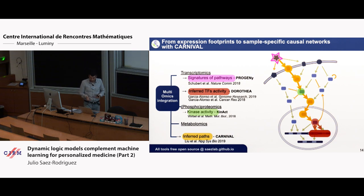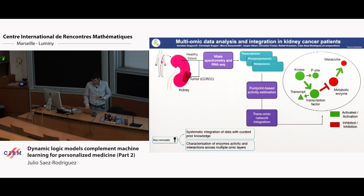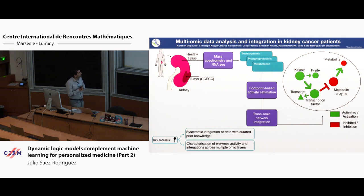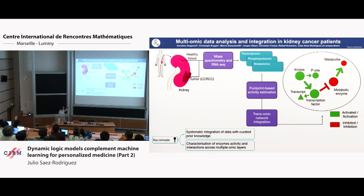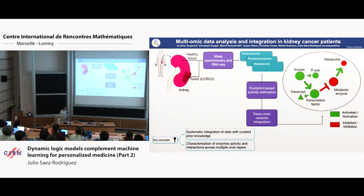Multi-omics is quite exciting. We tried to see if network and footprint approaches can be brought together in the context of multi-omics data analysis. This was work done with Raphael Kamein-Ahen, Christian Fretzai in Cambridge, and Jesper Olsen in Copenhagen — kidney cancer. When there is kidney cancer, sometimes the whole kidney is removed, and you can have quite some material to do omics analysis. So we had 60 patients, and we did mass spec and RNA-seq on the tumor and the healthy tissue, always having a comparison of what is changing in the tumor versus healthy. We computed footprints, kinases from phosphoproteomics, transcription factor activities from gene expression, and metabolic enzyme activities from metabolomics.